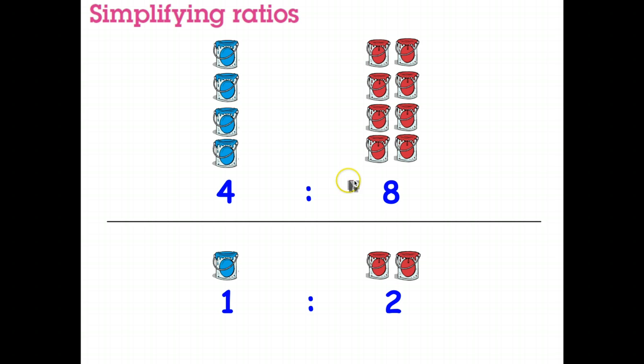So here's our question. We have four buckets of blue paint and eight buckets of red paint. We want to write that as a ratio. So it's just going to be four is to eight. But it turns out we can actually write that ratio in a simpler fashion.